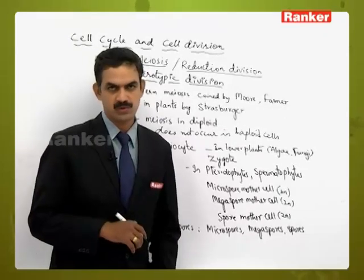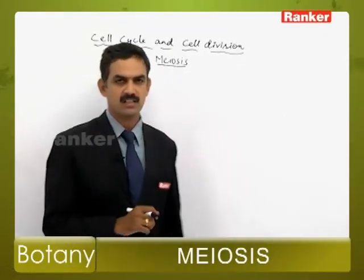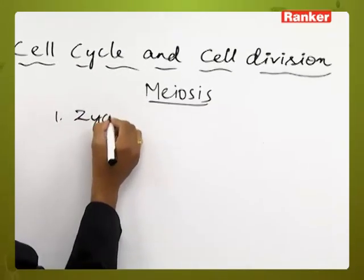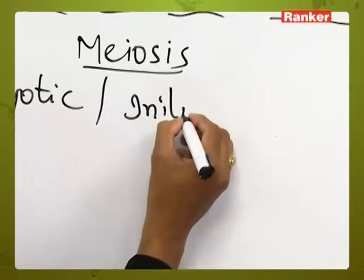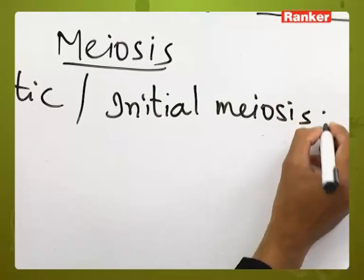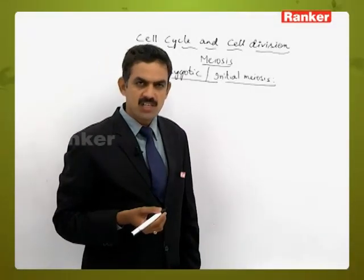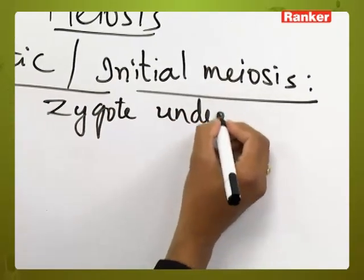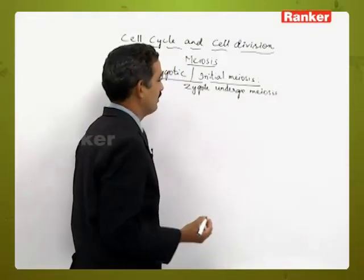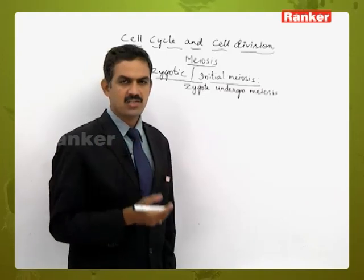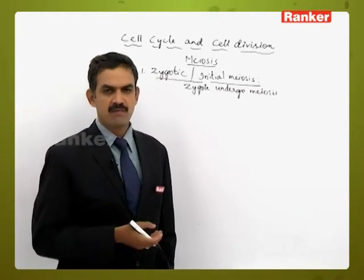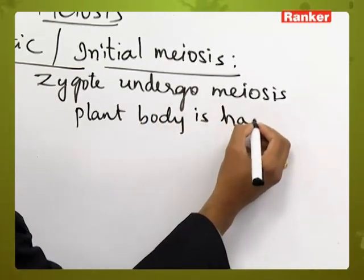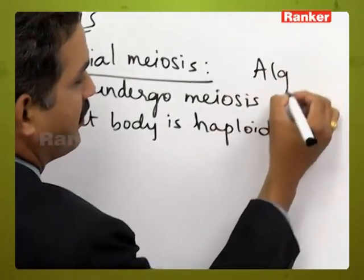Based on the stage at which meiosis takes place, meiosis is divided into three types. The first is zygotic meiosis, where meiosis occurs in the zygote — the zygote itself undergoes meiosis. When the zygote undergoes meiosis, the daughter generation or plant body formed will be in haploid condition. This type of character can be observed in all algae.